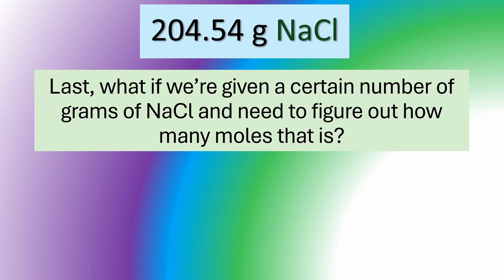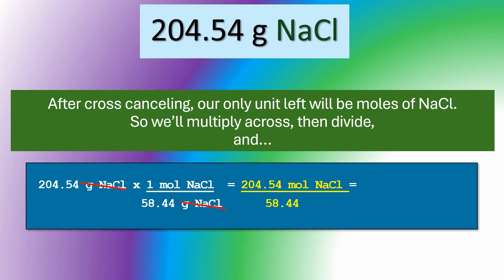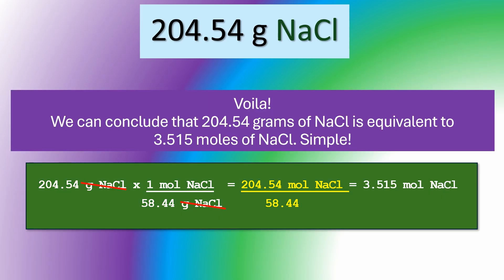What if we're given a certain number of grams of NaCl and need to figure out how many moles that is? We set up the equation so that we can cross-cancel the given number of grams of NaCl with the known mass of 1 mole of NaCl. After cross-canceling, our only unit left will be moles of NaCl. We multiply across, then divide. We wind up with 204.54 moles divided by 58.44, and we can conclude that 204.54 grams of NaCl is equivalent to 3.515 moles of NaCl.